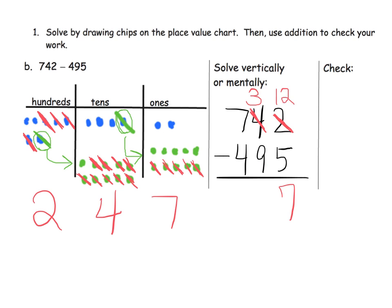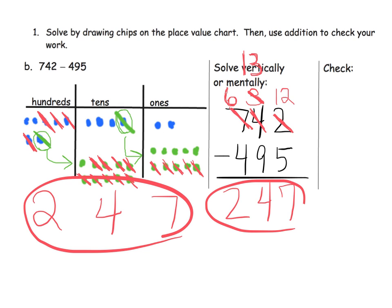We have 3 tens, and we need to take away 9 tens — we can't do that, so we unbundle a hundred. That leaves us with 6 hundreds and gives us 10 more tens. We already have 3 tens, so that makes 13 tens. 13 take away 9 leaves us with 4. Then 6 hundreds take away 4 hundreds leaves us with 2 hundreds. The answer is 247, exactly what we got before.